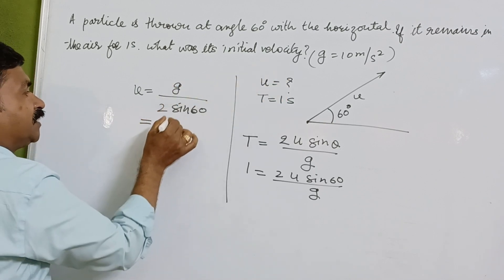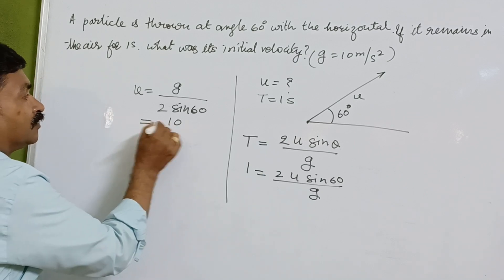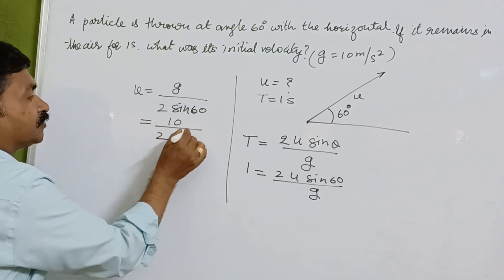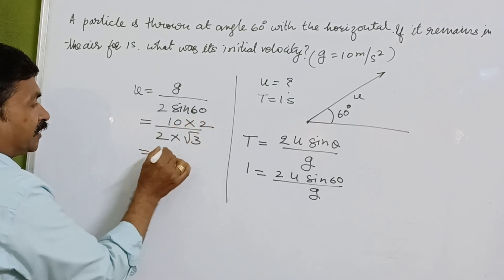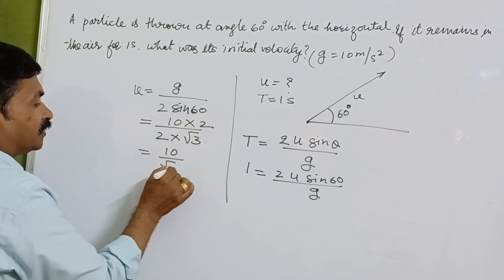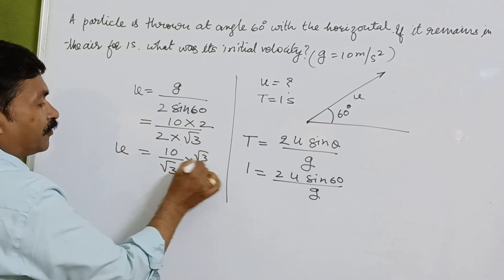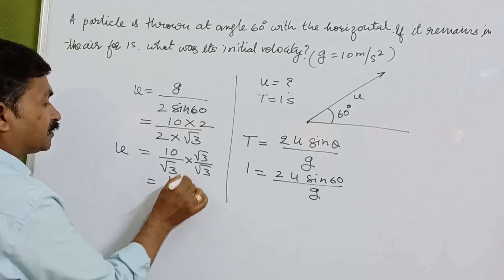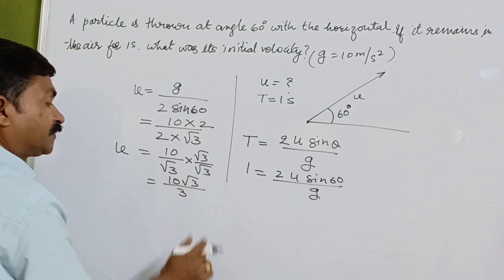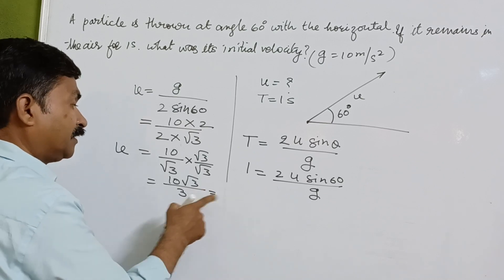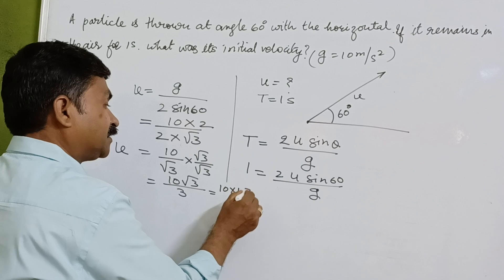The value of g we have to take 10 meter per second squared. Sin 60, that is √3/2. We can take like this, so it is 10/√3. Now we can rationalize it with √3/√3, so it is 10√3/3. Now finally we can calculate it with the help of this: 10 × 1.732.